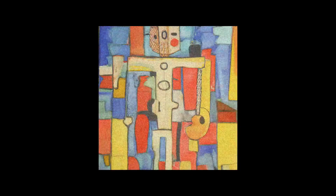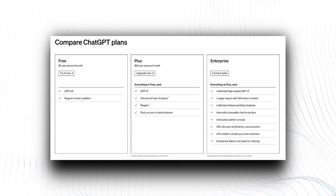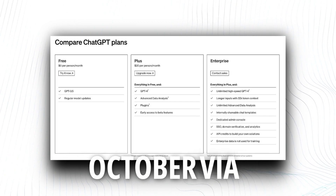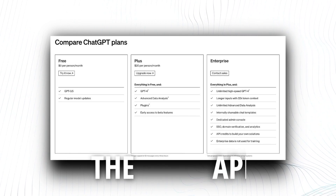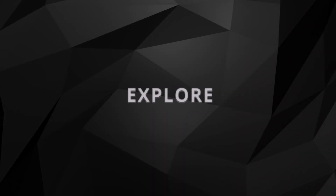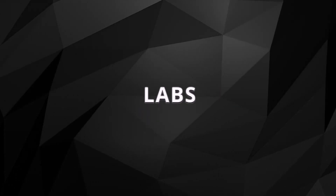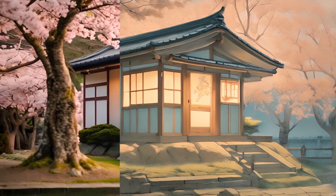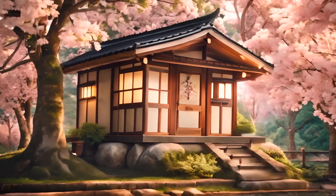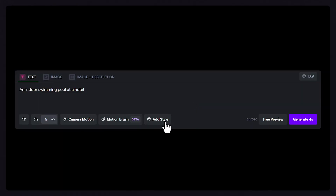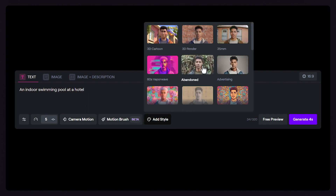DALL-E 3 is now in research preview, and it's set to become available to ChatGPT Plus and Enterprise customers in October via the API. For those eager to explore its capabilities, it will be accessible in labs later this fall. The beauty of DALL-E 3 is that the images you create with it are entirely yours to use — you don't need OpenAI's permission to reprint, sell, or merchandise them.